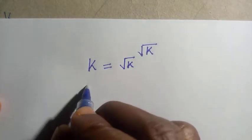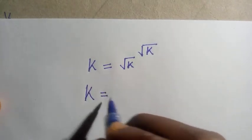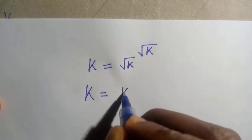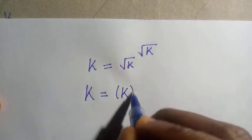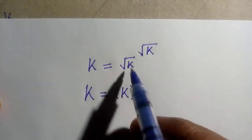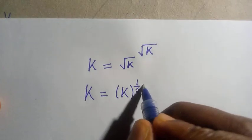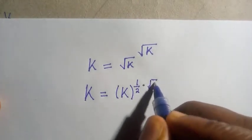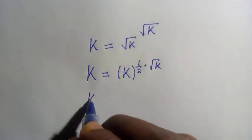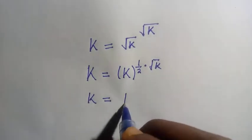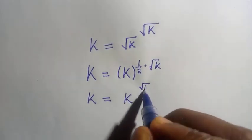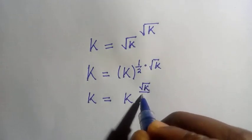So here we write it as k equals — let's take this square root of k as k raised to power of 1 divided by 2. Since this one is also raised to power of this one, we multiply this with the square root of k. And having this, we have k equals k raised to power of square root of k divided by 2.